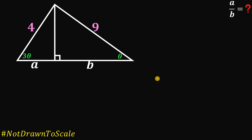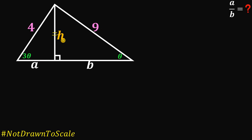Alright, so to answer this question — and again, this triangle is not drawn to scale — let's begin. To answer this, let's call this height H. From here, we have two right triangles, one with side length 4 and the other with side length 9, sharing height H.